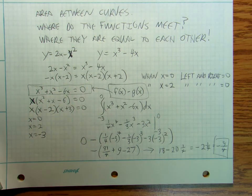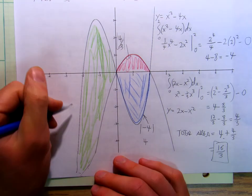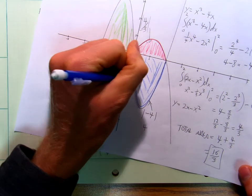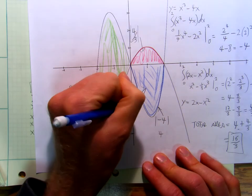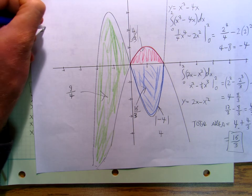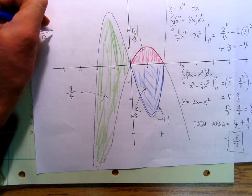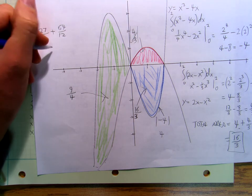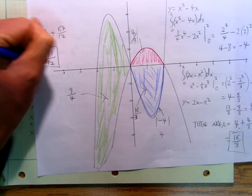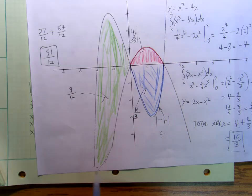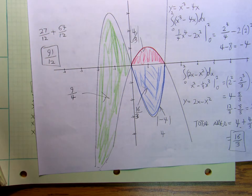Taking the absolute value, this region has an area of positive 9 fourths, and this other region has an area of 16 thirds. So the total area is 27 twelfths plus 64 twelfths, which is 91 twelfths. So the whole area between this curve and this curve that's bounded by them is 91 twelfths. That's a long video that doesn't really fit anywhere, but I hope you learned something.